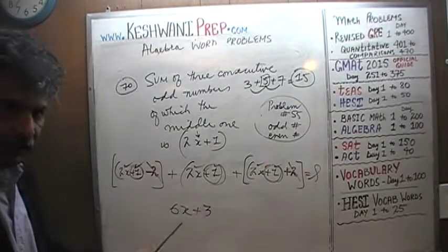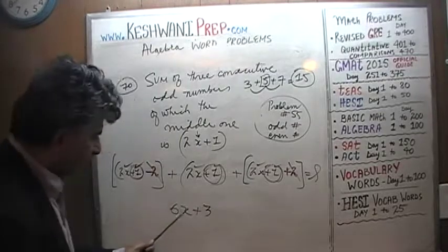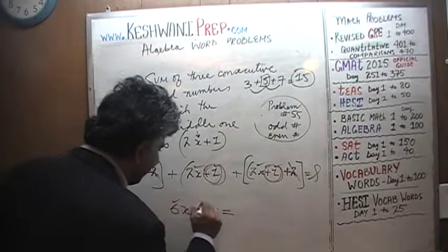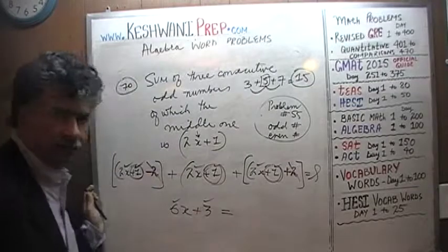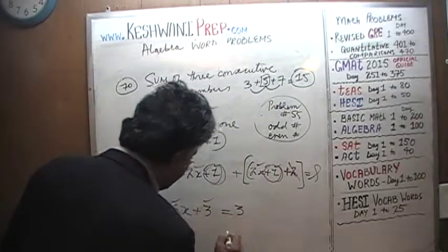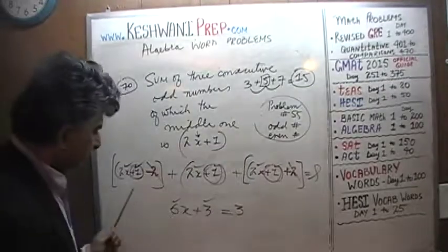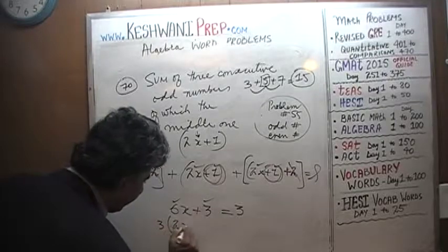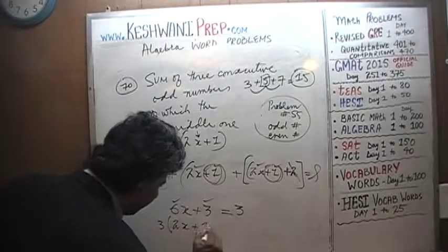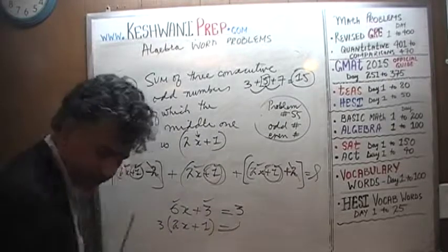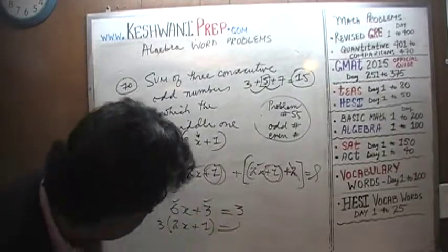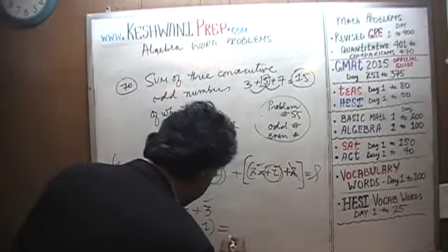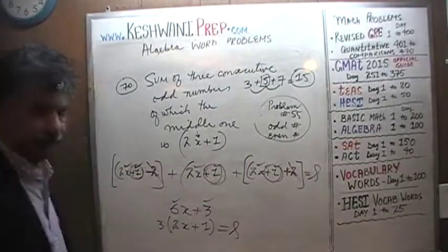But we can't leave it like this — we have to simplify it. We have a 6 and a 3, so there is a common factor of 3. We take it out, and after factoring out 3 we are left with 2x plus 1. So our final answer is 3 times 2x plus 1.